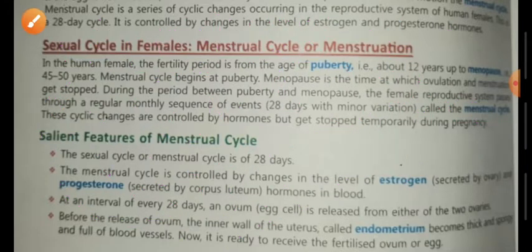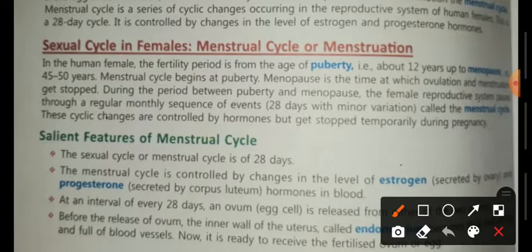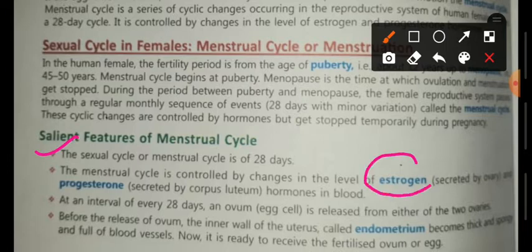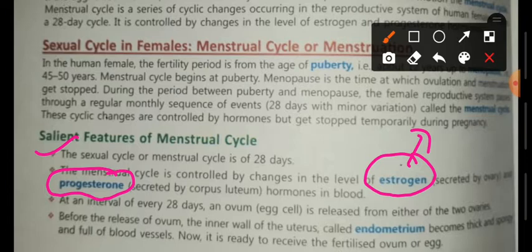How many days will it go? Total is 28 days. We will show you some salient features. The 28-day cycle is followed, and the hormone level will change. The estrogen will change, and the other is progesterone. Estrogen is essential for the egg to be released from the ovaries.